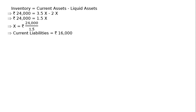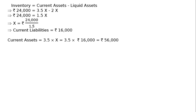We have got one part of our answer: current liabilities is equal to Rs 16,000. And current assets is equal to 3.5X, that is 3.5 multiplied by 16,000, which is equal to Rs 56,000. This is the final answer.